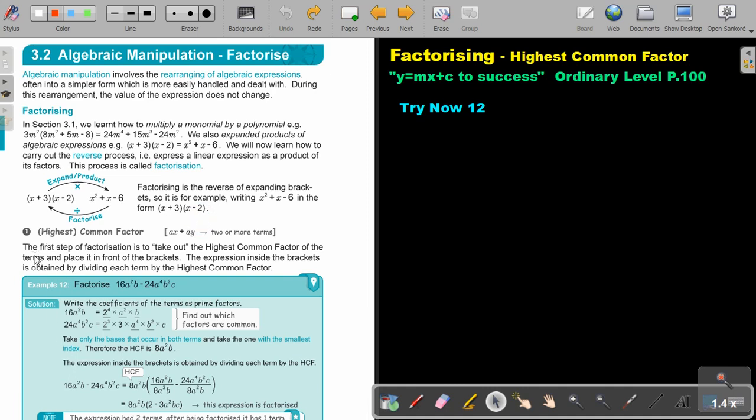Now, in this video, we are going to focus on the highest common factor. The first step of factorization is to take out the highest common factor of the terms and place it in front of the bracket. The expression inside the bracket is obtained by dividing each term by the highest common factor. Now, factorize. There's your two terms. So, write the coefficients of the terms as prime factors.